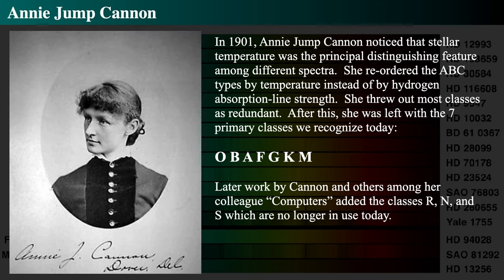Approximately 11 years later, in 1901, Annie Jump Cannon noticed that stellar temperatures were the principal distinguishing characteristic among the spectra. She took all the existing arrangements and rearranged them not by hydrogen absorption line strength, but according to decreasing temperature, removing most classes as redundant. She found O stars to be the hottest, then B, A, F, G, K, and M. These are the seven primary stellar spectral classes we recognize today.